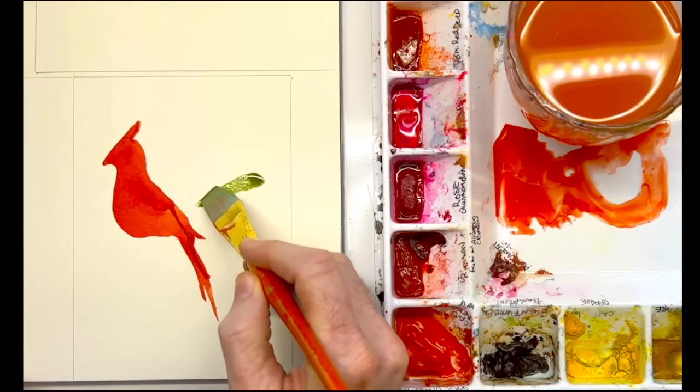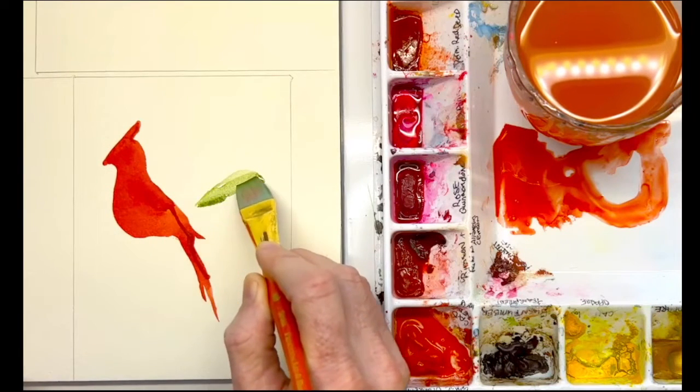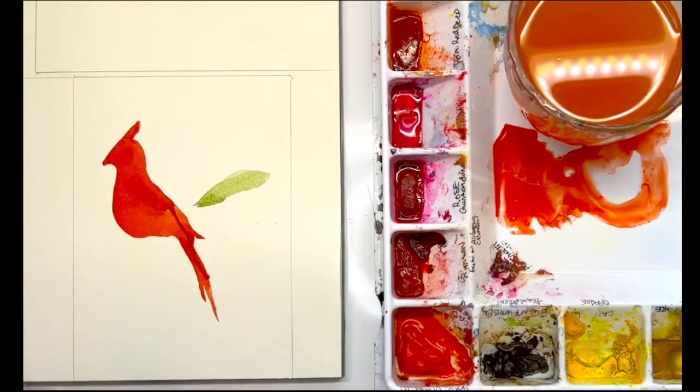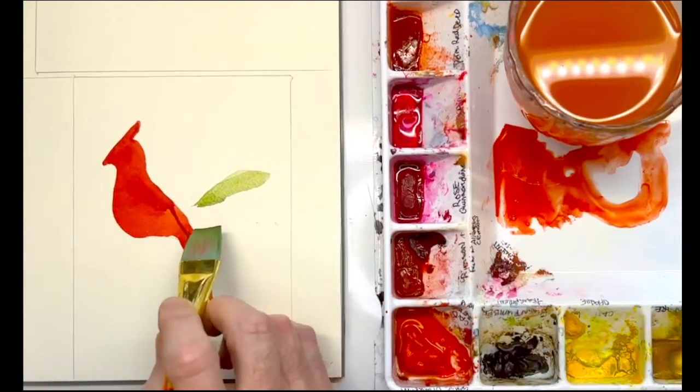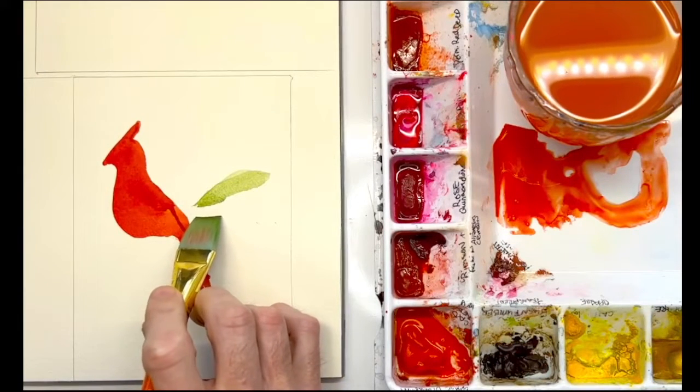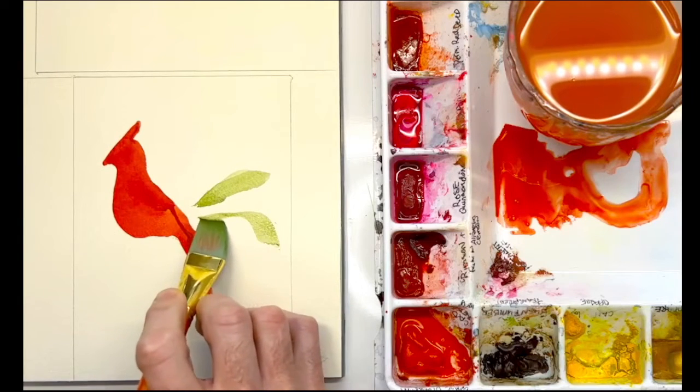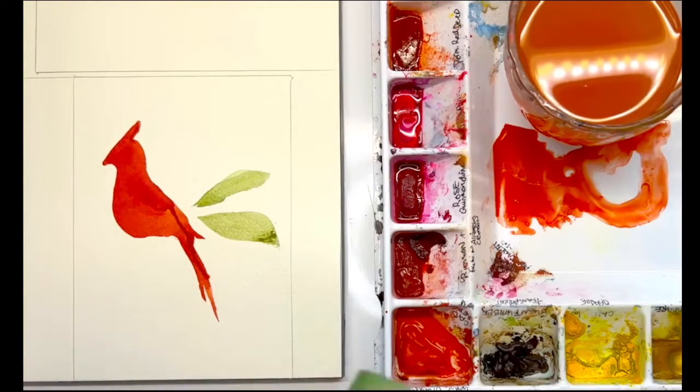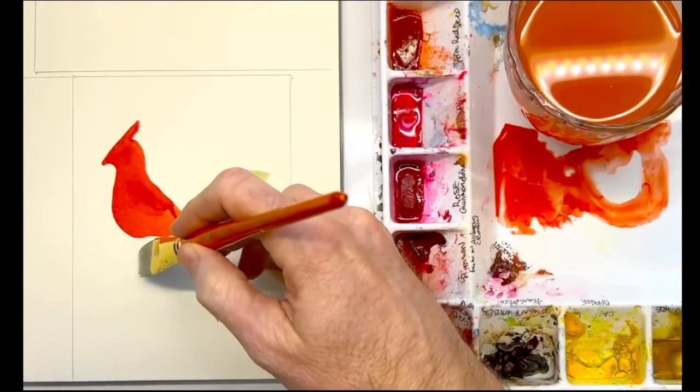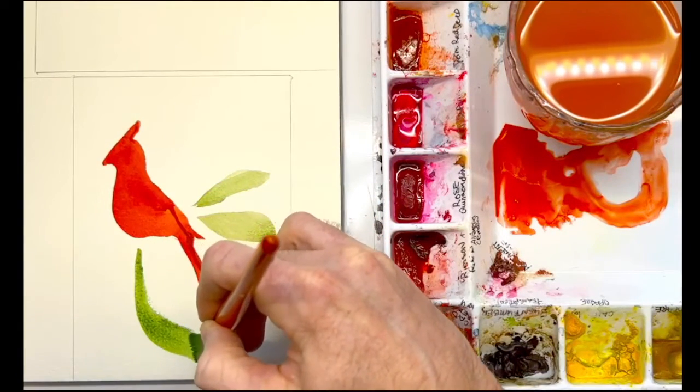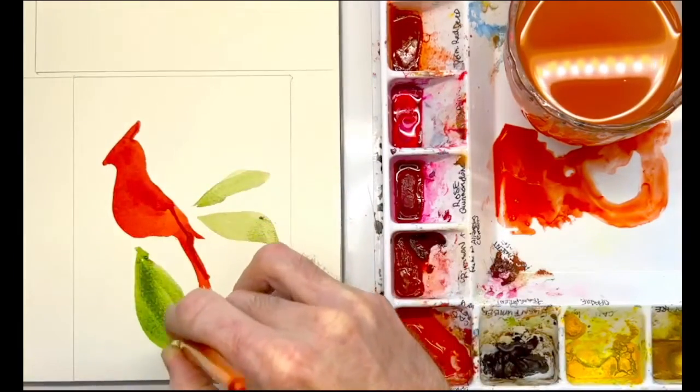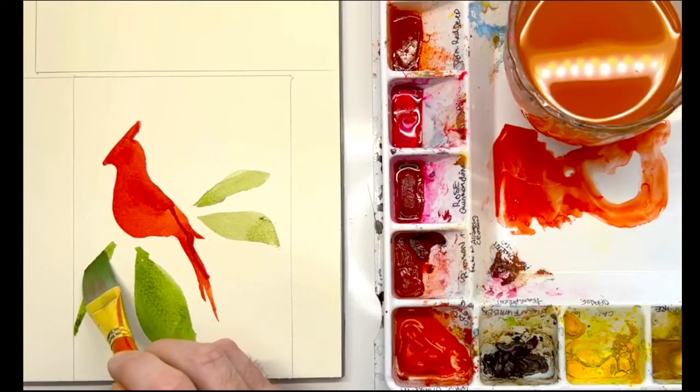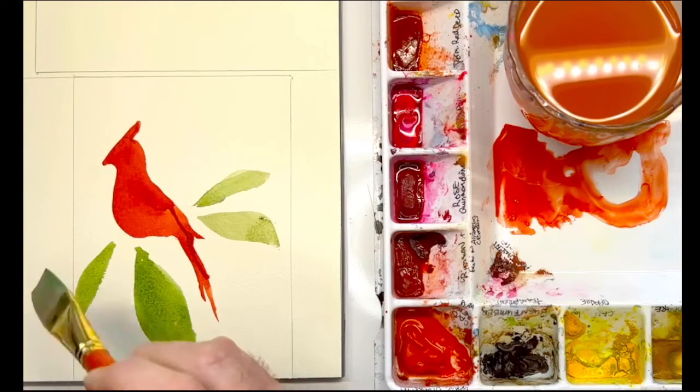You can still create that design with your flat brush. You're just going to come out and kind of come to a point. That's one of my first leaves. Let's do another one coming out here and then kind of connect it. I'm going to create a branch that this cardinal is on. Let's create one that's pretty large right here. Then let's make one that's kind of going off of the page and it's a little bit skinnier, going right down towards the center there.